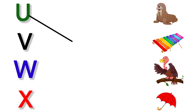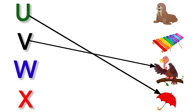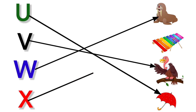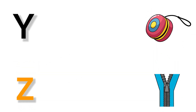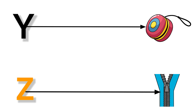U for Umbrella, V for Vulture, W for Walrus, X for Xylophone, Y for Yo-yo, Z for Zip.